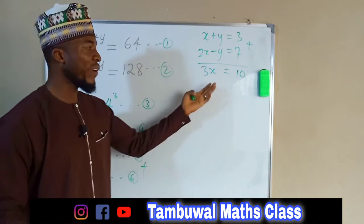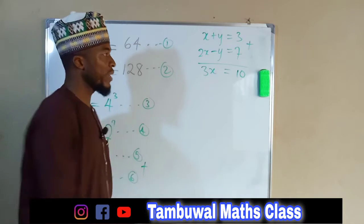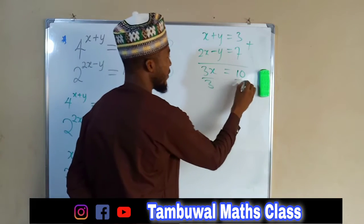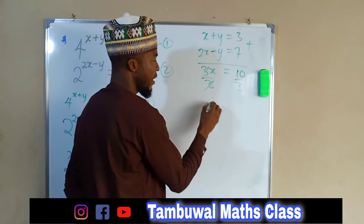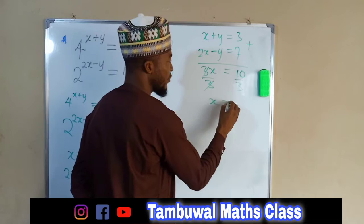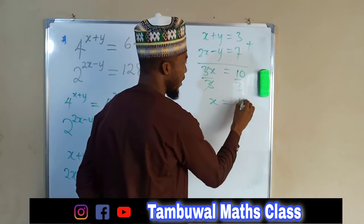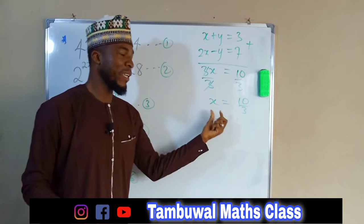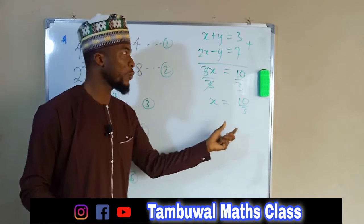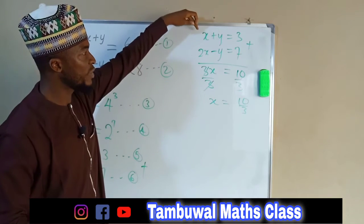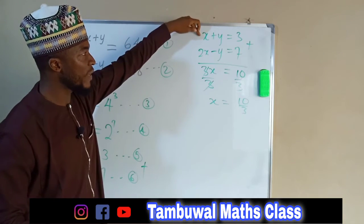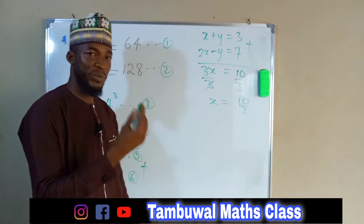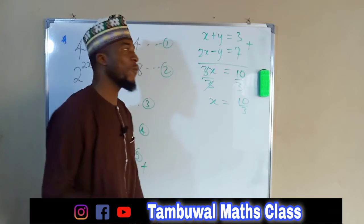So 3X is equal to 10. Now to find the value of X, we divide both sides by 3. Hence, X equals 10 over 3. Having obtained the value of X, we can go ahead and substitute it back into either equation to obtain the corresponding value of Y.